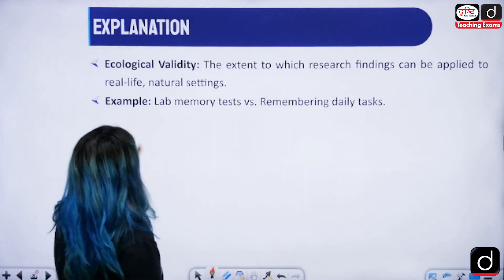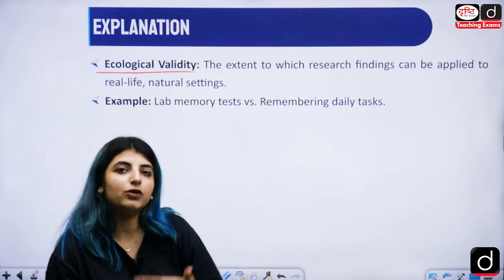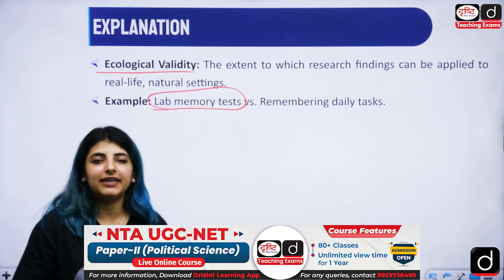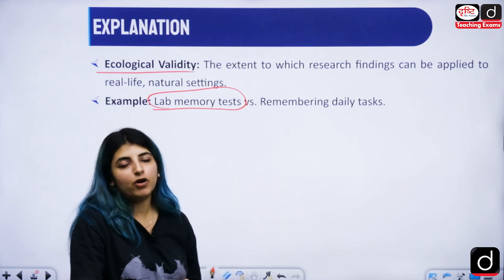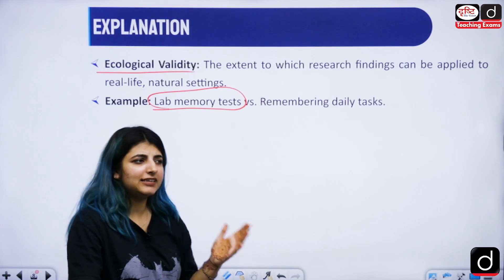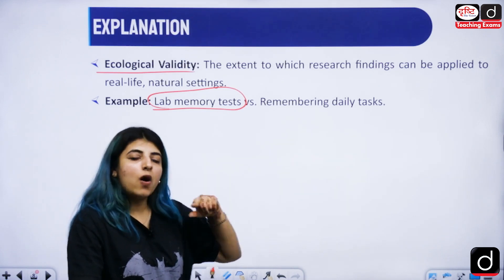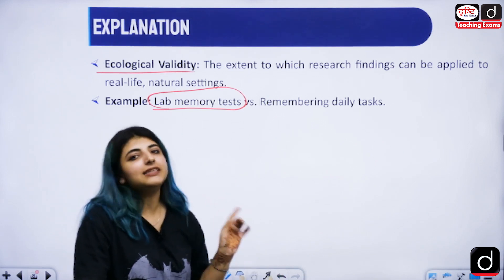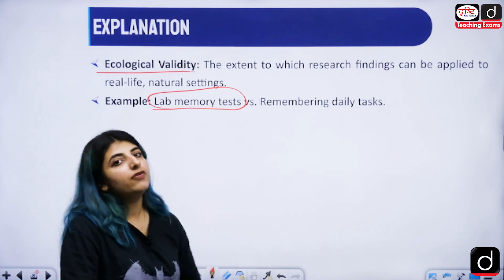What about the other options? Ecological validity refers to when whatever you have done in your research can be applied in real life natural settings as well. If some memory tests were taken in a laboratory and later when you move back to your real life you are memorizing certain things like getting things from the market to home, how well you're doing in real life setting, that is ecological validity. An important fact to note is that ecological validity is a subtype of external validity.